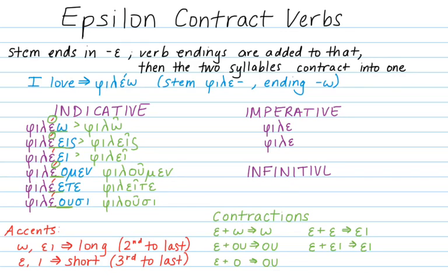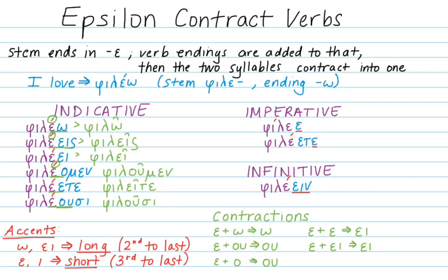For the imperatives and the infinitive, we add our standard endings, and remember we apply the accents first before we do contractions. If the last syllable is long, which is true of philetein — the infinitive — then the accent goes on the second to last syllable. If the last syllable is short, which is true of both imperatives, then the accent goes on the third to last syllable, giving us phileé and phileéte. Now we apply our contractions: epsilon-epsilon contracts to eta, giving us philê, and because the accent was not involved in the contraction, it stays exactly where it was.